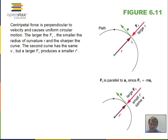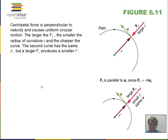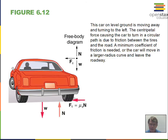Centripetal force points towards the center, causes centripetal acceleration, and changes the direction of the velocity vector. With more centripetal force, we can have a smaller circle — the force is more effective at changing the direction of velocity. More force means more acceleration and a more effective change in velocity direction.